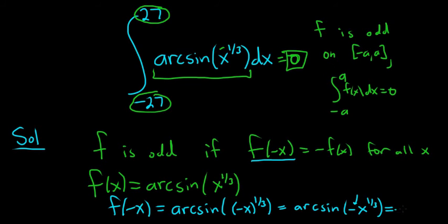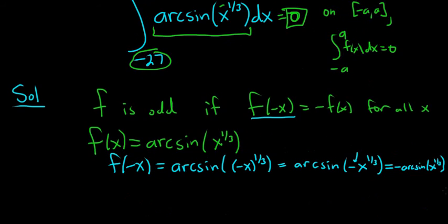So this negative, you can just pull it out. So this is arc sine of x to the one-third, right? Which is precisely equal to negative f of x, right? Because f of x is the arc sine of x to the one-third.